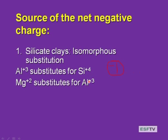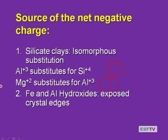In the octahedral layer, aluminum is the normal occupant. When magnesium plus two substitutes for aluminum plus three, the same result — minus one. Every time that substitution happens in the octahedral layer, the CEC increases with higher net negative charge at the surface. For iron aluminum hydroxides, the mechanism is different — there is no isomorphous substitution. The reigning paradigm for their net negative charge involves exposed crystal edges, where H+ dissociation occurs.